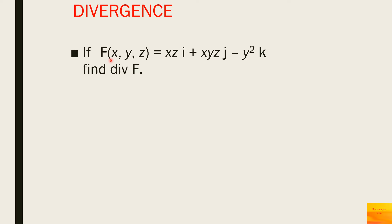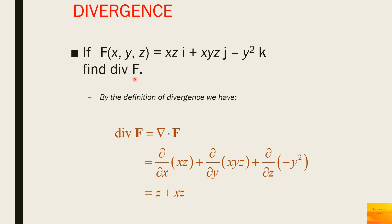Example: if F̄ = xz·î + xyz·ĵ − y²·k̂, find the divergence of F̄. We differentiate the first term with respect to x, the second with respect to y, and the third with respect to z. Differentiation of xz with respect to x is z; differentiation of xyz with respect to y is xz; and there is no z term in −y², so that differentiation is 0. The final answer is z + xz.